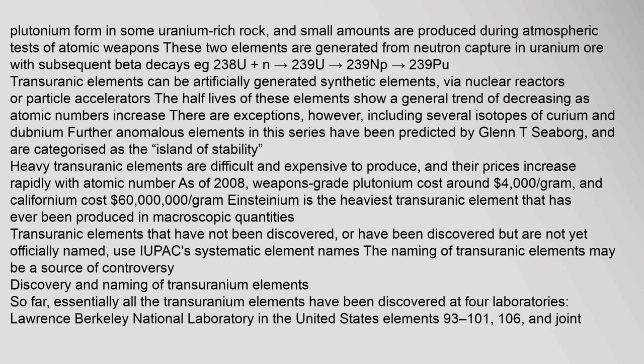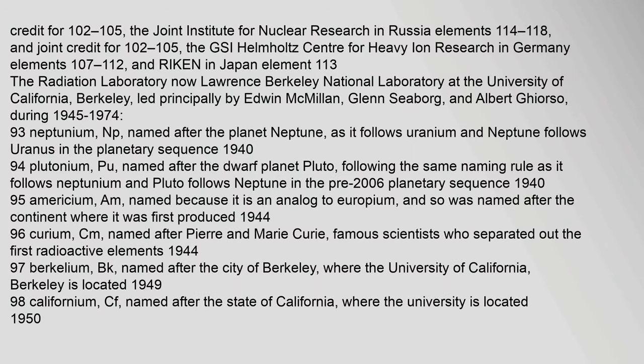So far, essentially all the transuranium elements have been discovered at four laboratories: Lawrence Berkeley National Laboratory in the United States, responsible for elements 93–101, 106, and joint credit for 102–105; the Joint Institute for Nuclear Research in Russia, responsible for elements 114–118 and joint credit for 102–105; and the GSI Helmholtz Center for Heavy Ion Research in Germany, responsible for elements 107–112.